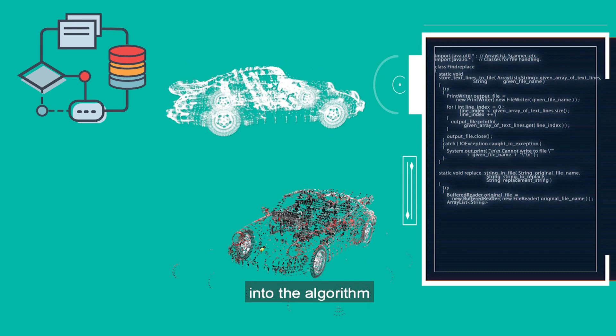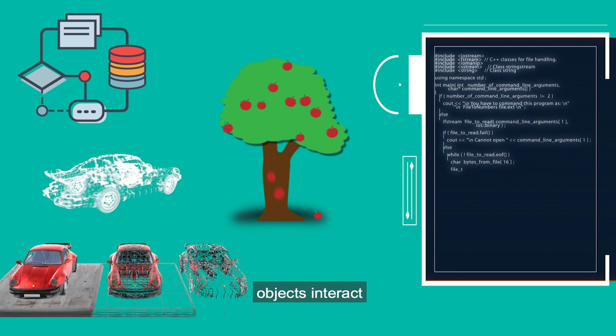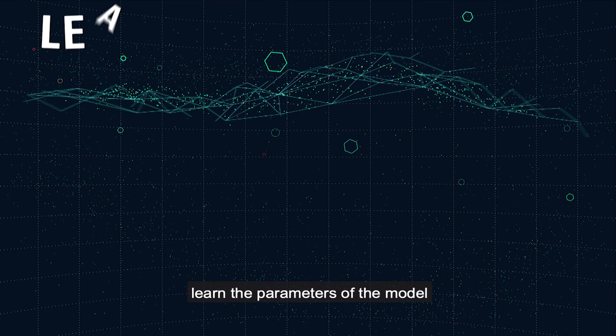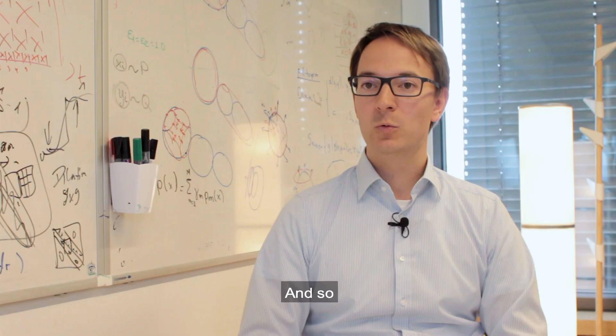There are basically two ways to do this. One is injecting expert knowledge into the algorithm, for instance about how the image formation process works or how objects interact in the physical world. The other way is to learn the parameters of the model from large amounts of training data. That is called machine learning, and this second paradigm is something that has shown more and more success over the last years. We are working on both aspects in our group.